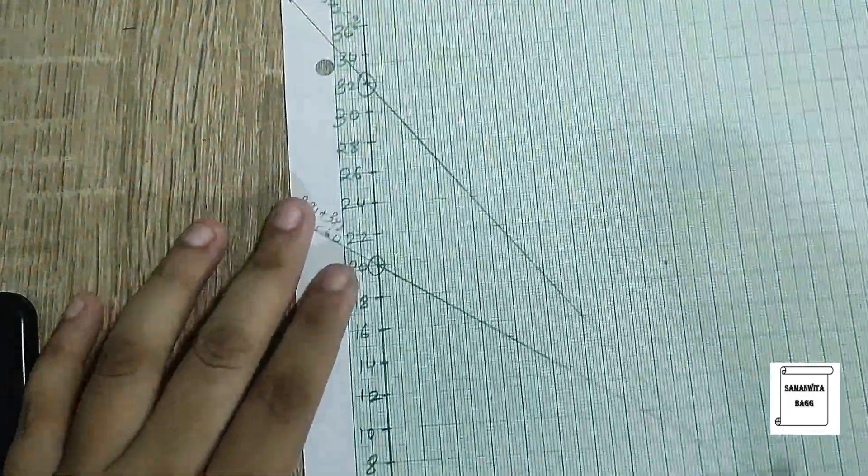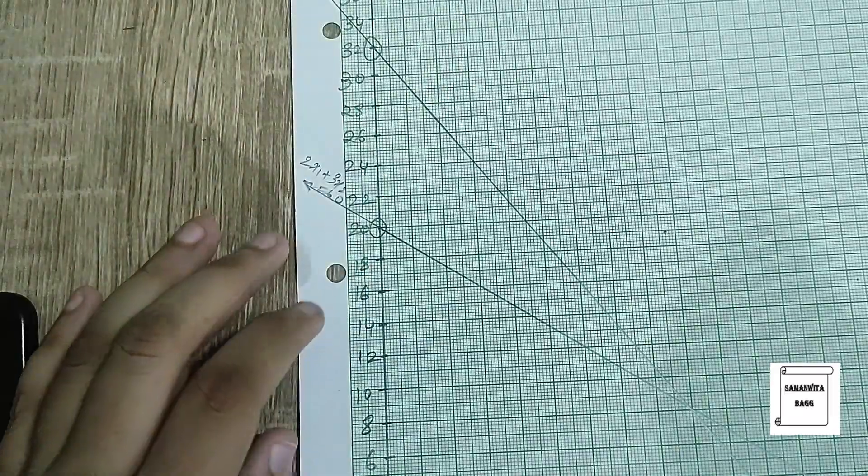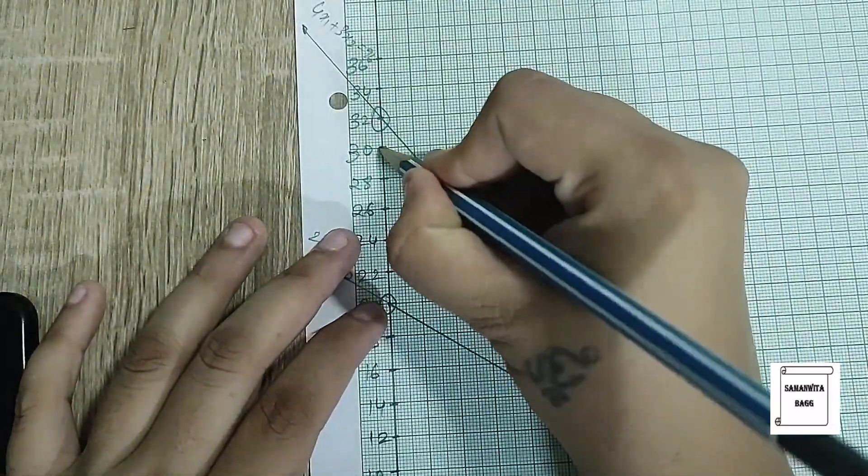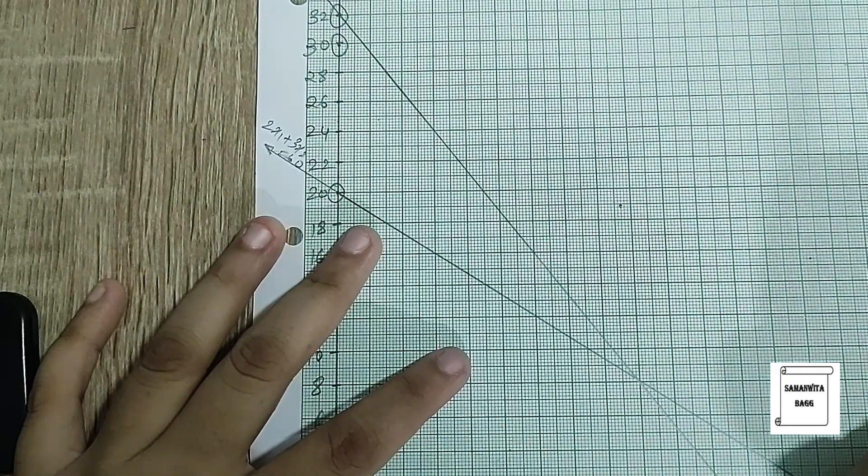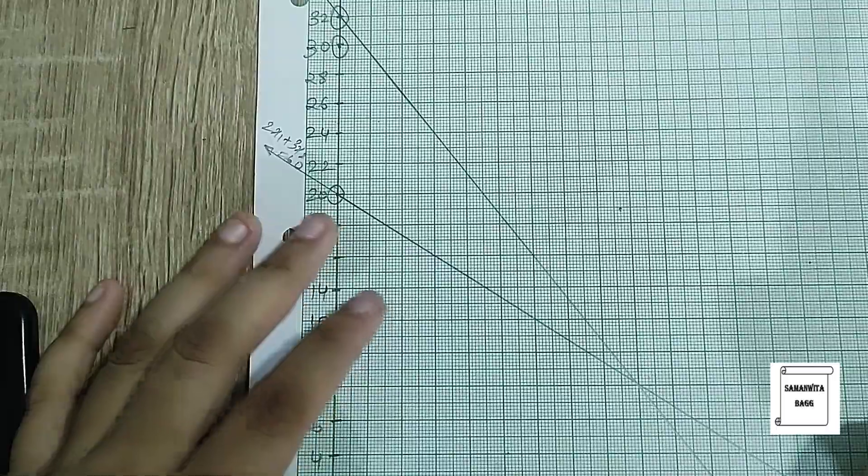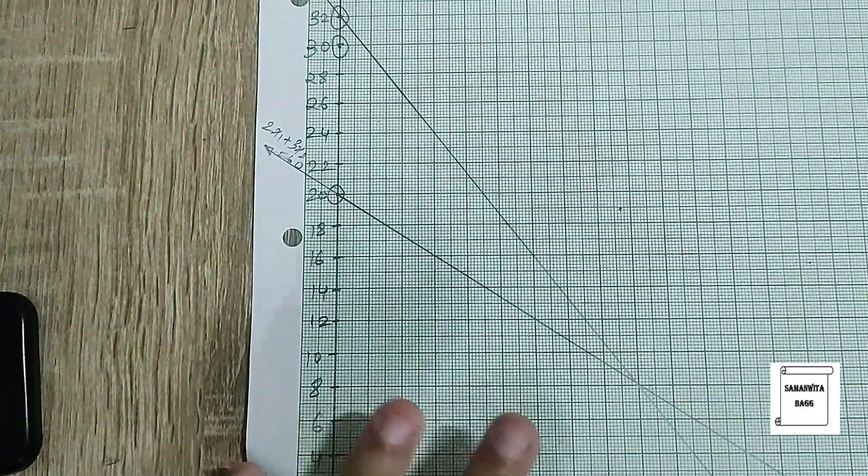And label the equation. The last two points are (0, 30) and (26.25, 0). I'll roughly mark it over here and join these two points now.